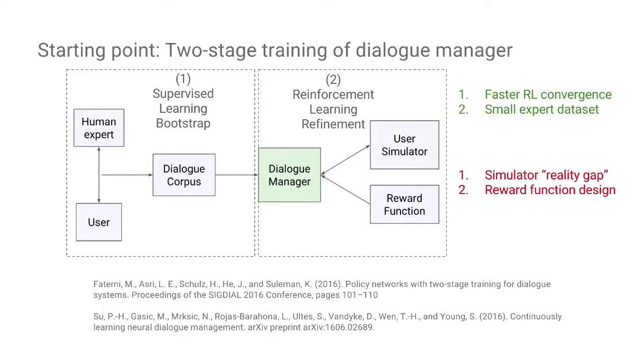The RL phase also makes it possible to bootstrap from a very small expert dataset. However, in contrast to AlphaGo, there are certain issues with using this in dialogue. One is that there is a reality gap between a user simulator and an actual user, and the other is that it's difficult to design a reward function.